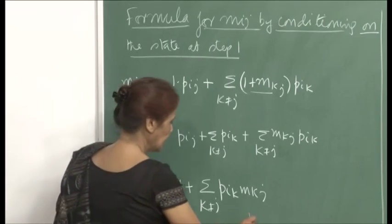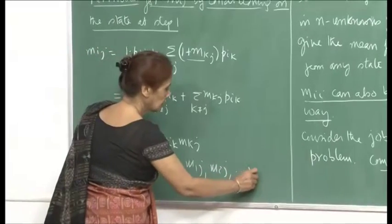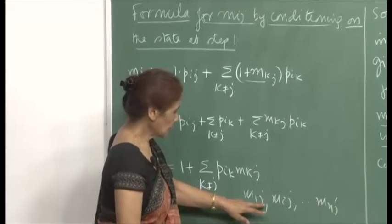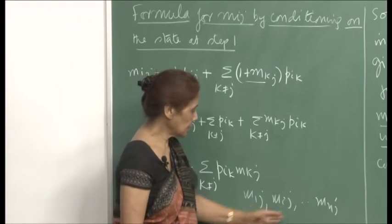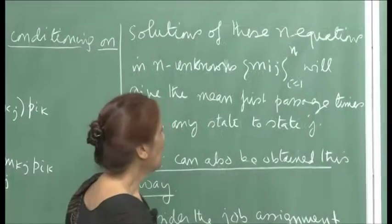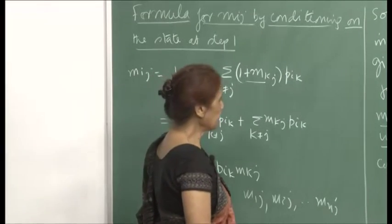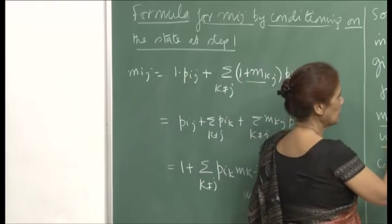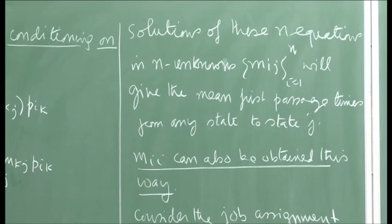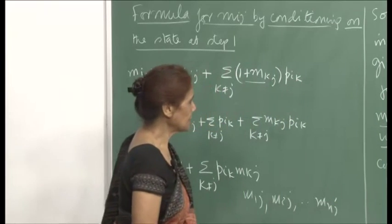Rewriting: since summing p_ij plus sigma p_ik (k not equal to j) equals 1 (the full row sum), we get m_ij = 1 plus sigma over k not equal to j of p_ik times m_kj. This gives n equations in n unknowns — m_1j through m_nj — for transitioning to j from any state 1 to n.